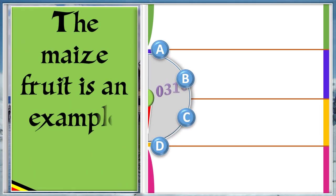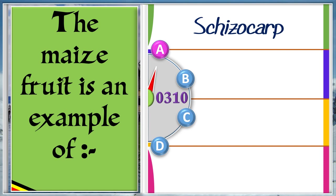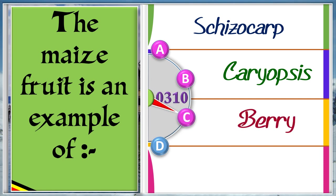The maize fruit is an example of A: Schizocarp. B: Caryopsis. C: Achene. D: Drupe. The answer is B, caryopsis.